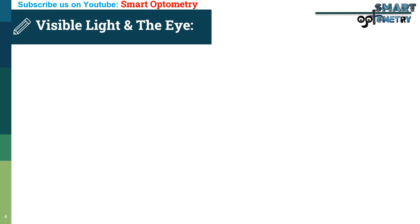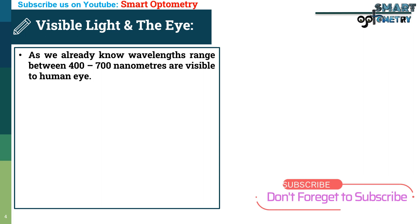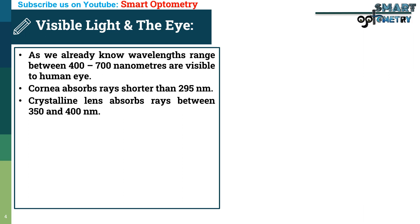Relationship between visible light and the eyes. As we already know, wavelengths ranging between 400 to 700 nanometers are visible to the human eye. The cornea absorbs rays shorter than 295 nanometers, and the crystalline lens absorbs rays between 350 to 400 nanometers. In aphakic eyes, the light range between 350 to 400 nanometers can also pass on to the retina. Therefore, aphakic eyes are sensitive to those wavelengths, which gives rise to a sensation of blue or violet color.